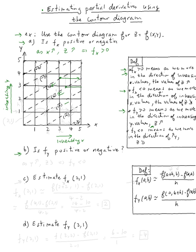Let's take a point: if we take this one and move in the y direction, we're going from z equals 6 to z equals 2, so it's decreasing. Again, going from here to here, z decreases from 2 to negative 2, and so on. So as y increases, z decreases. Therefore, the partial derivative with respect to y is less than zero.